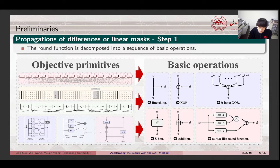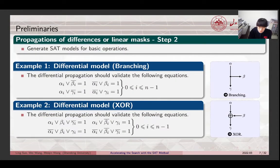The first step to create clauses in the first group is decomposing the round function into a sequence of basic operations, including the linear operations and the non-linear operations. The second step should be generating SAT models for basic operations. Here, we show the differential models for branching and XOR operations. Models for other operations can be found in the paper.